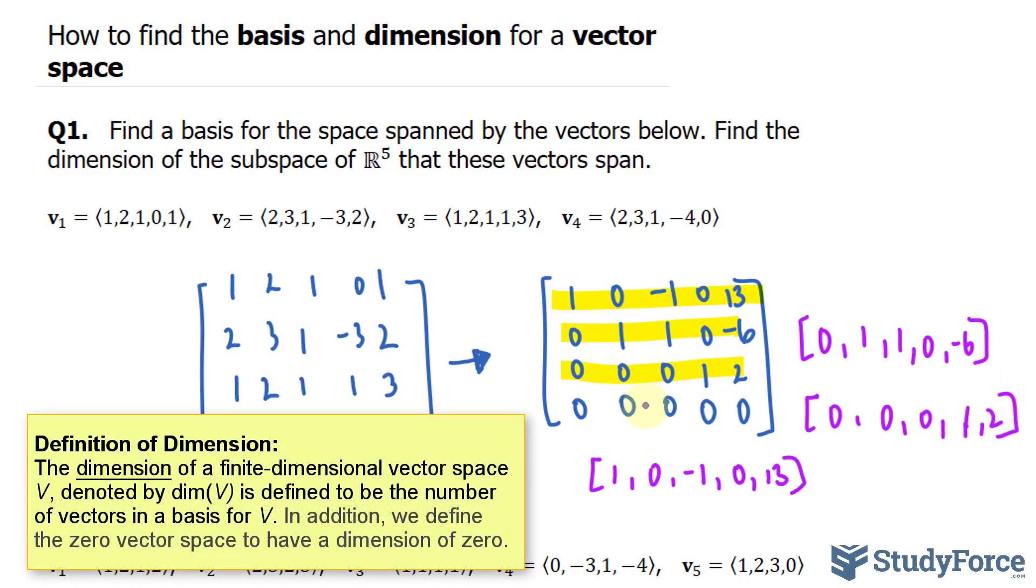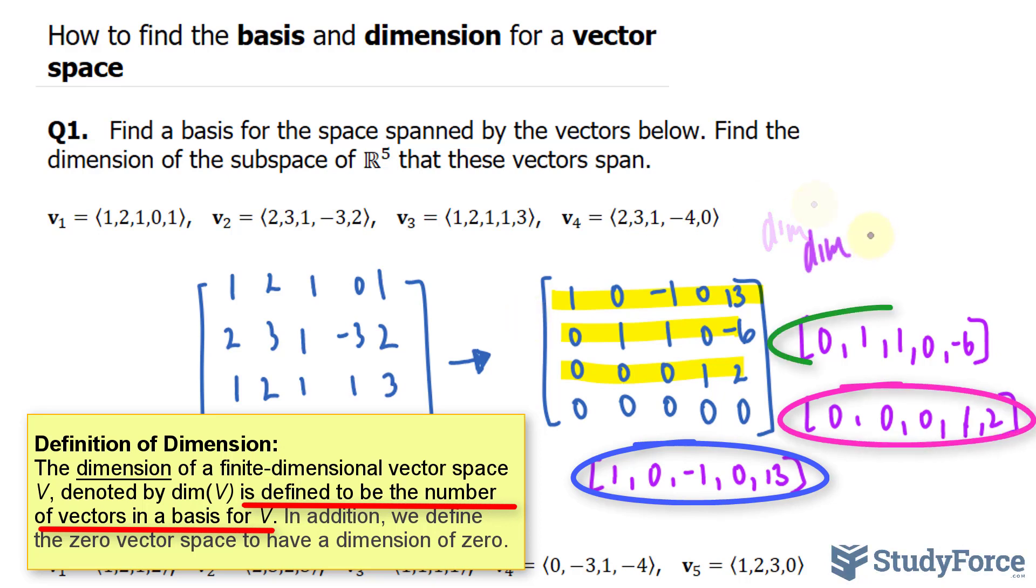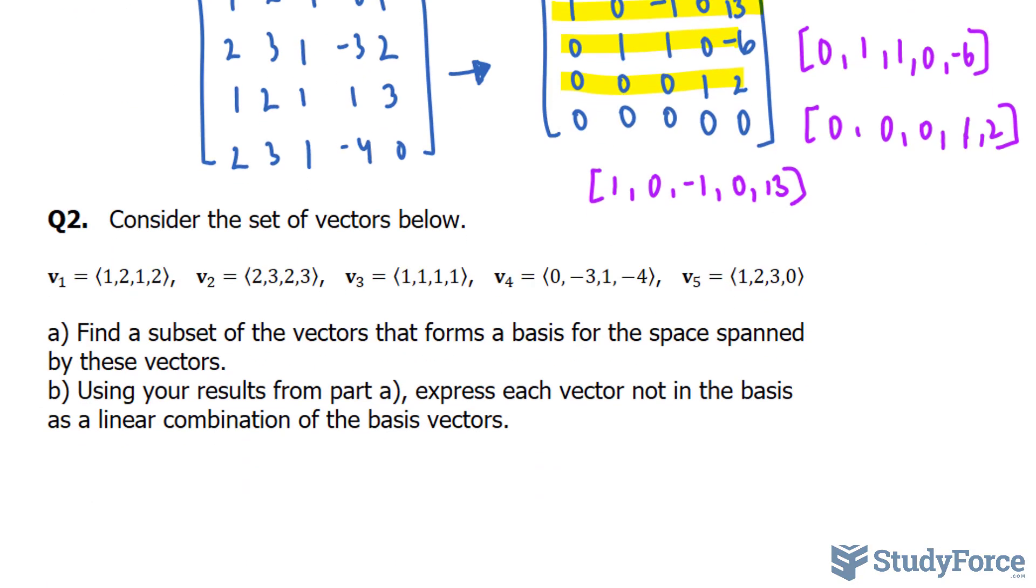The third one. In terms of our dimension, we can write down that the dimension of this matrix, let's call it A, is 3. That's the answer to question number 1.